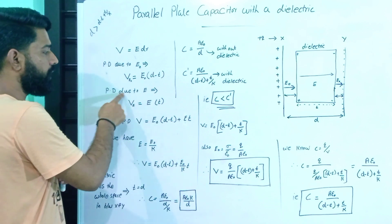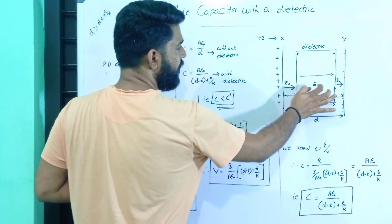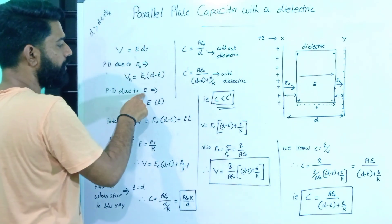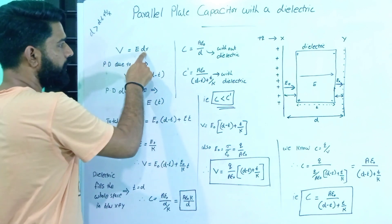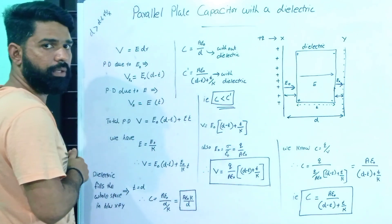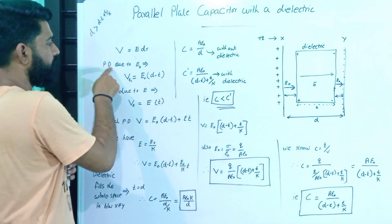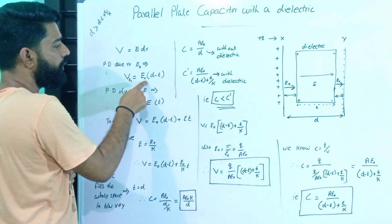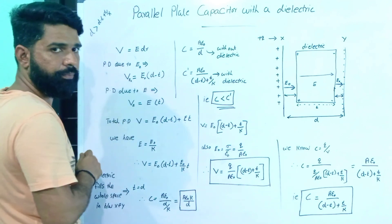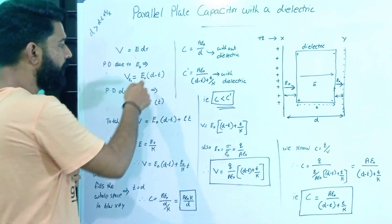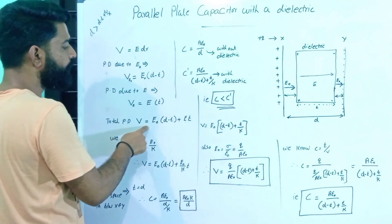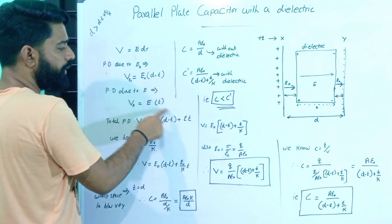The potential difference due to E₀ is V = E₀ into (d minus t). The potential difference due to E is V = E into t. So the total potential difference is equal to E₀ into (d minus t) plus E into t.